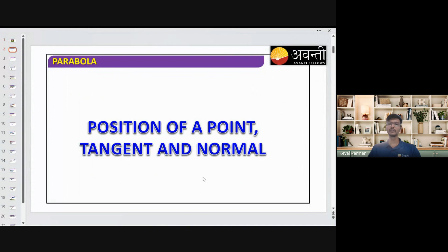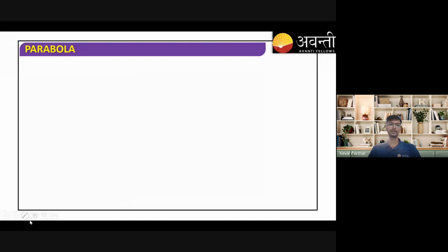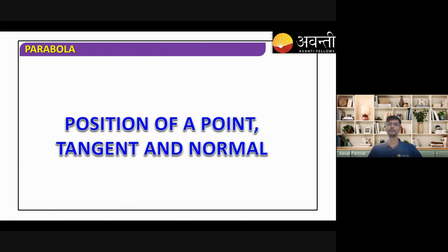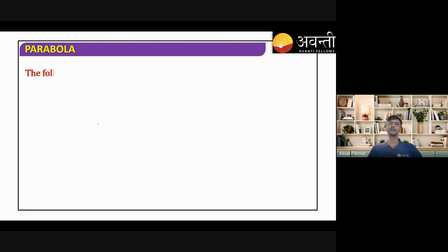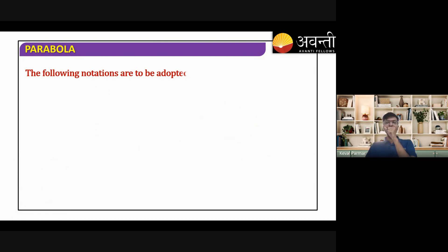Next is the position of a point with respect to a parabola. I hope you remember we did the position of a point with respect to a circle. In every topic we will do the same thing — position of point with respect to parabola, then with respect to ellipse, and then with respect to hyperbola.